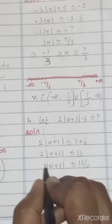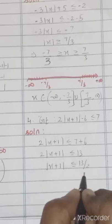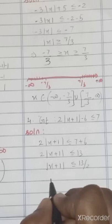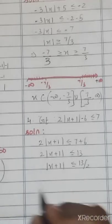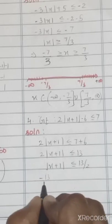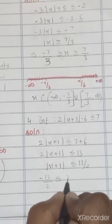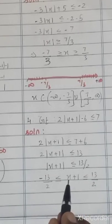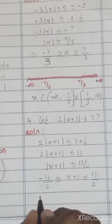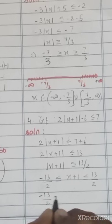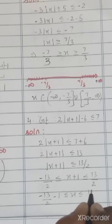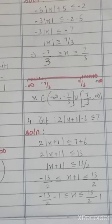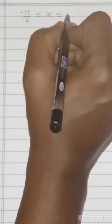Now remove the modulus by taking positive and negative values, giving −13/2 ≤ x + 1 ≤ 13/2. We need only x, so take plus 1 to that side: −13/2 − 1 ≤ x ≤ 13/2 − 1. Taking LCM gives −15/2 ≤ x ≤ 11/2.